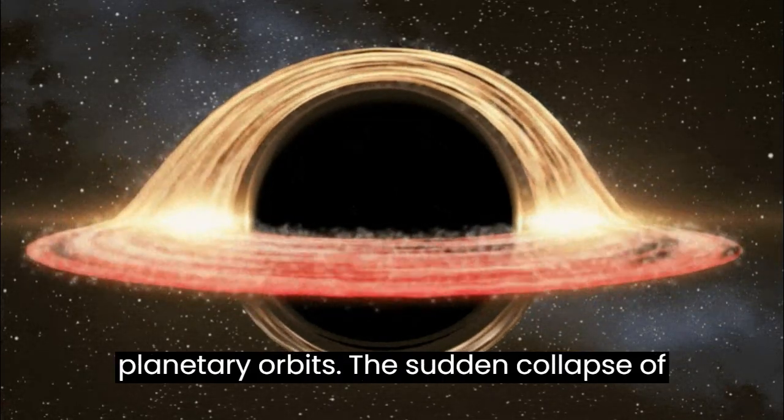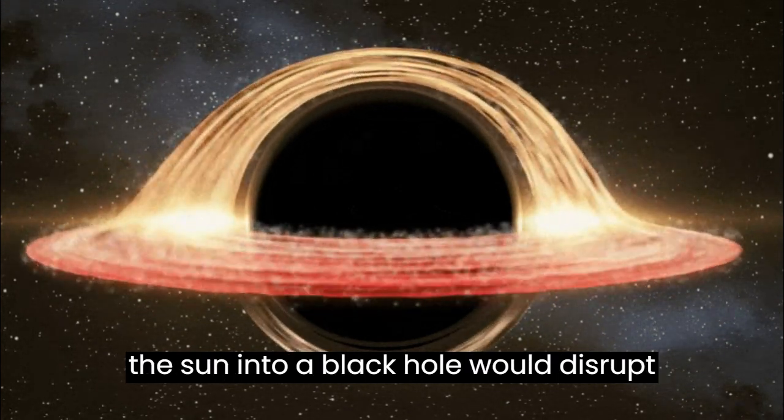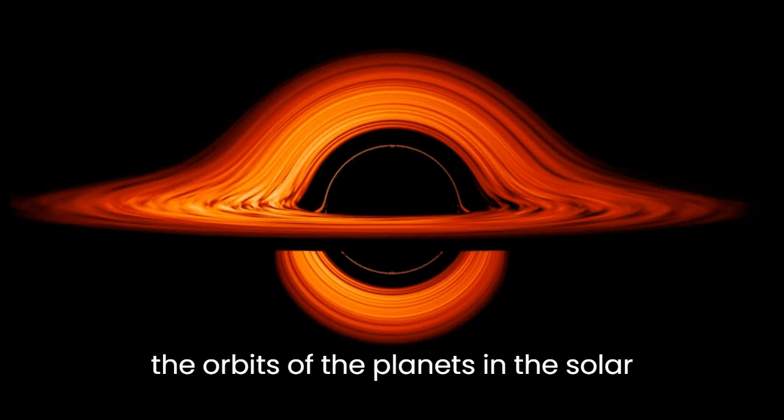Disruption of planetary orbits. The sudden collapse of the Sun into a black hole would disrupt the orbits of the planets in the solar system.